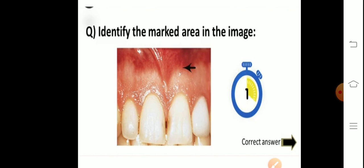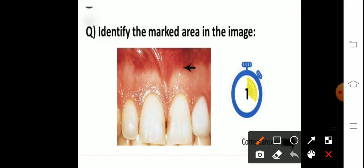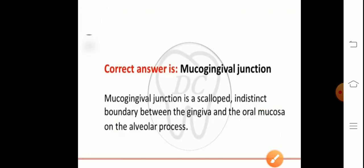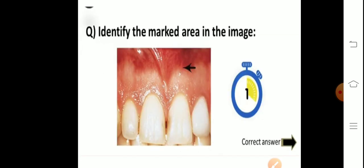Next — identify the marked area in the image. What is this marked area representing with the arrow? This image is of the mucogingival junction. The mucogingival junction is a scalloped, indistinct boundary between the gingiva and the oral mucosa.